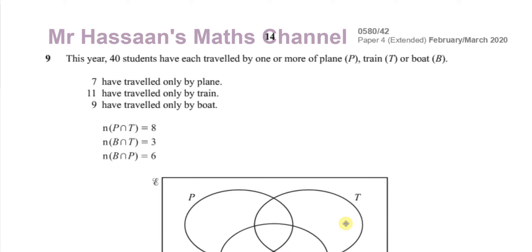Welcome back, this is Mr. Hassan's Maths Channel. I'm now going to be answering question number 9 from the February-March 2020 IGCSE Cambridge CAIE paper 4. This is the extended syllabus, the 0580 syllabus. This question is about set notation and Venn diagrams.